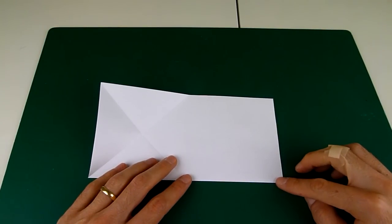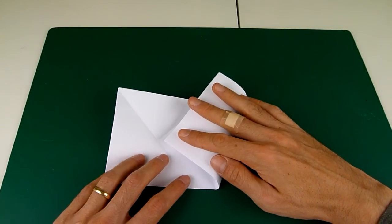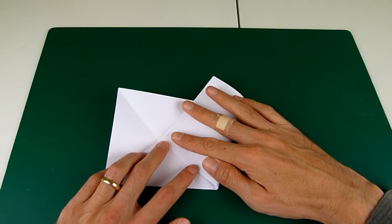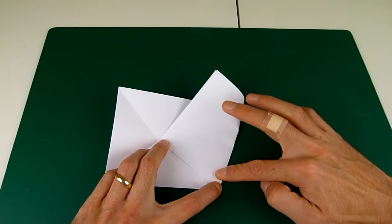Now take this bottom right corner and fold it so that it goes right to the middle of that cross there. And then make this crease.